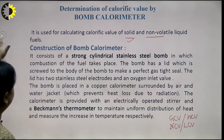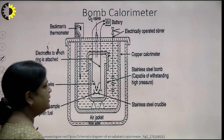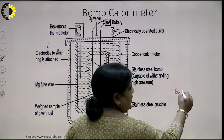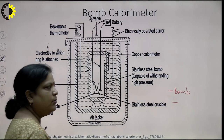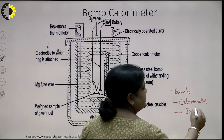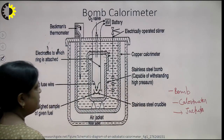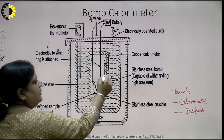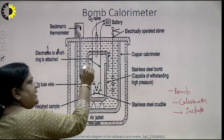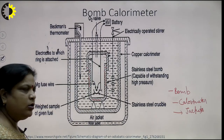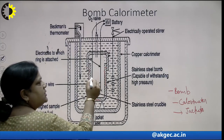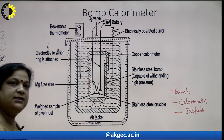Now, construction of bomb calorimeter. Let us see the diagram. The bomb calorimeter mainly consists of three parts. The first part is a container — a stainless steel cylinder which is called the bomb. The second is a copper calorimeter, and the third is air and water jackets. The stainless steel cylinder called the bomb is covered with a lead lid, which is tightly screwed to make it gas-tight or leak-proof.